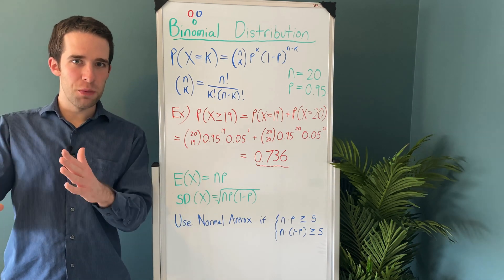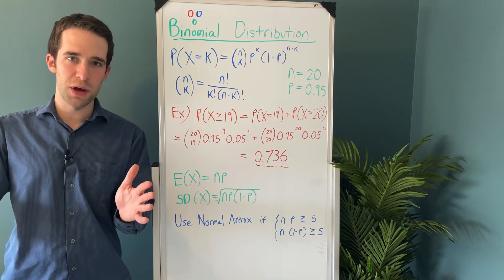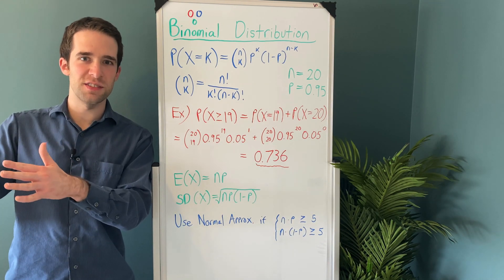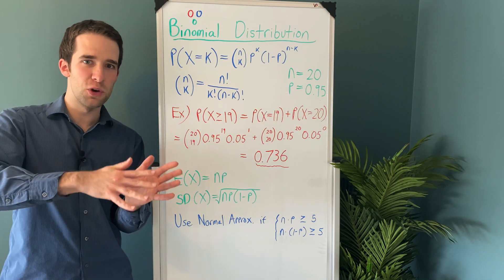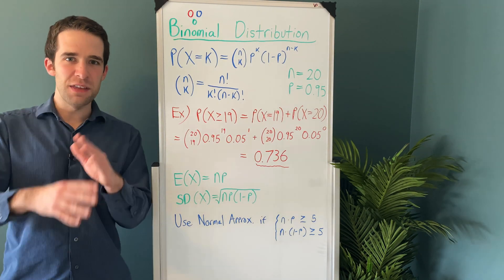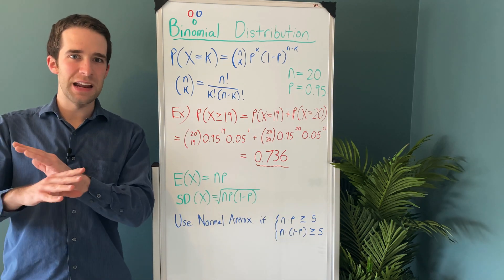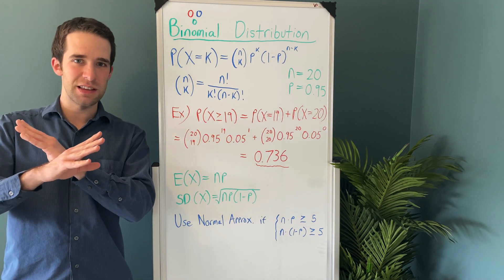In practice, again, the binomial distribution is super common because there are tons of instances where you can assume the probability of success, or you can look back at historical similar data to just infer it, and then doing calculations like this becomes super straightforward. And again, in industry, you'll see cases like this all the time.